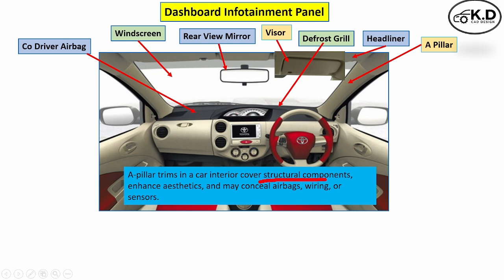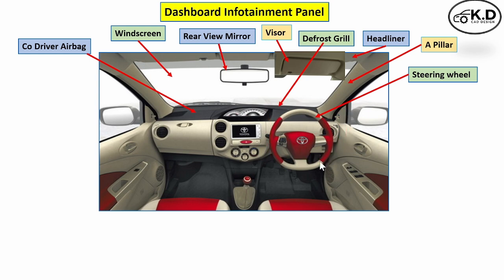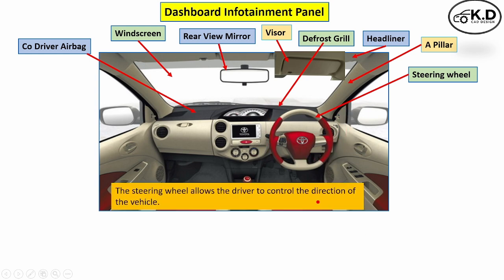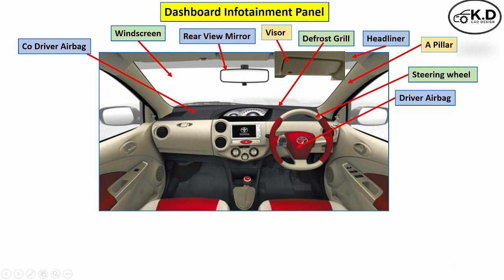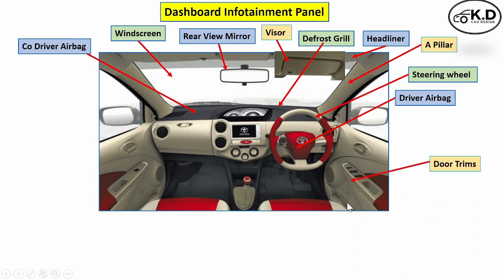The next part is the steering wheel. The steering wheel function is to allow the driver to give direction to the car. The next part is the driver airbag, which opens during a collision to protect the driver from hitting the steering wheel.